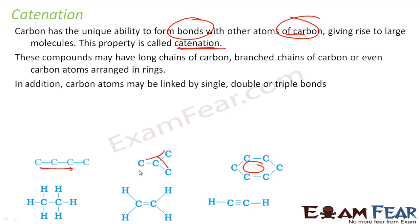In addition to this, carbon may form single, double, or triple bonds — that's also part of catenation. It may form single bonds; for example, in this case, all single bonds. Double bond — if you see, there is a double bond between these two carbons. There is also a triple bond between these two carbons.